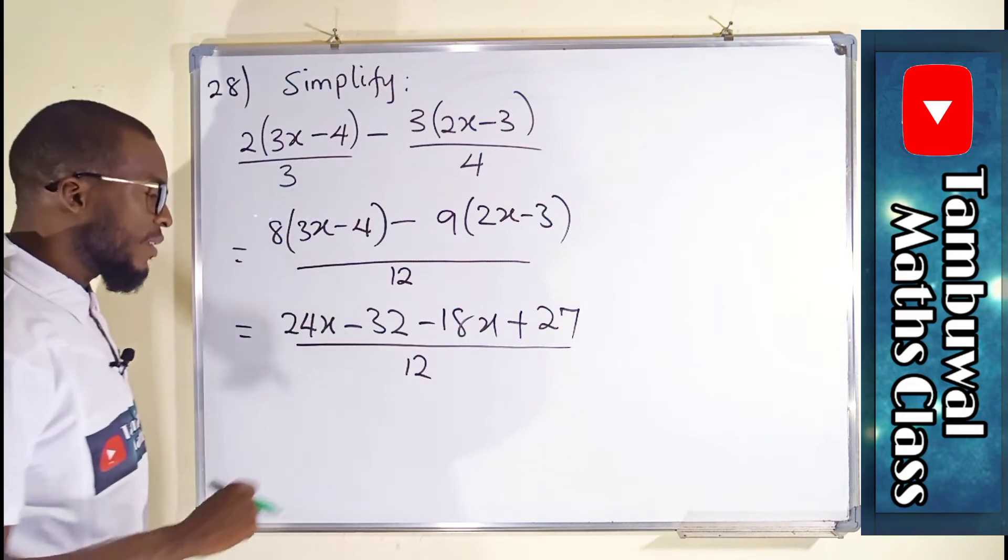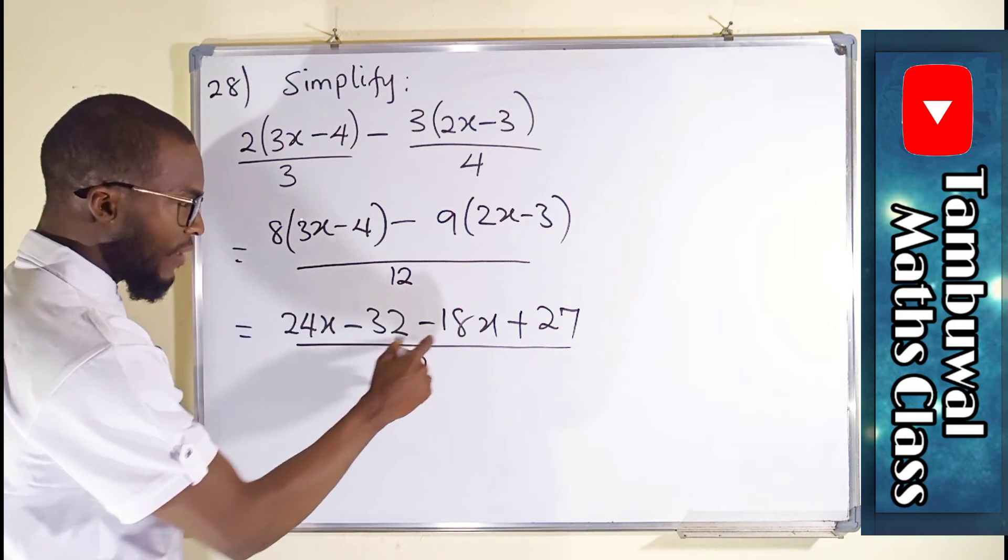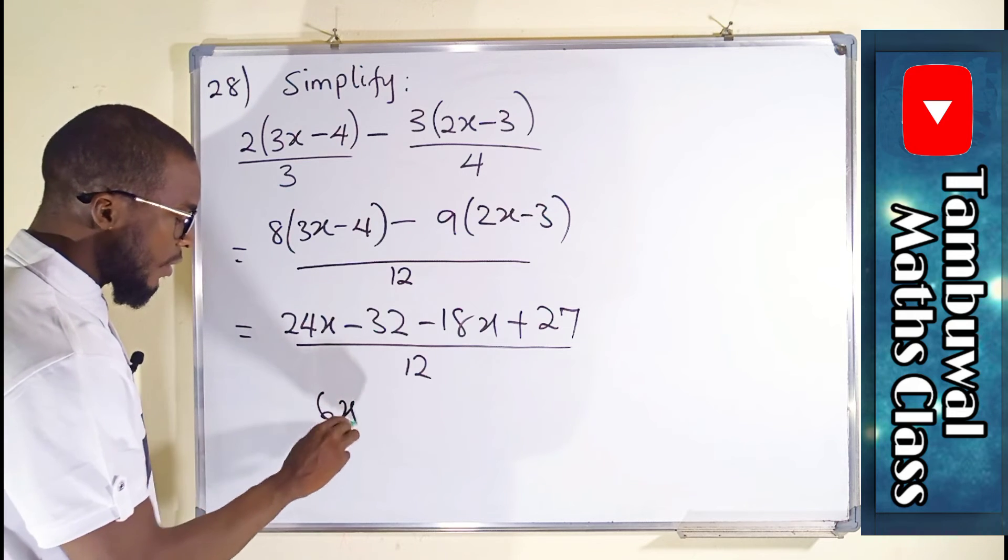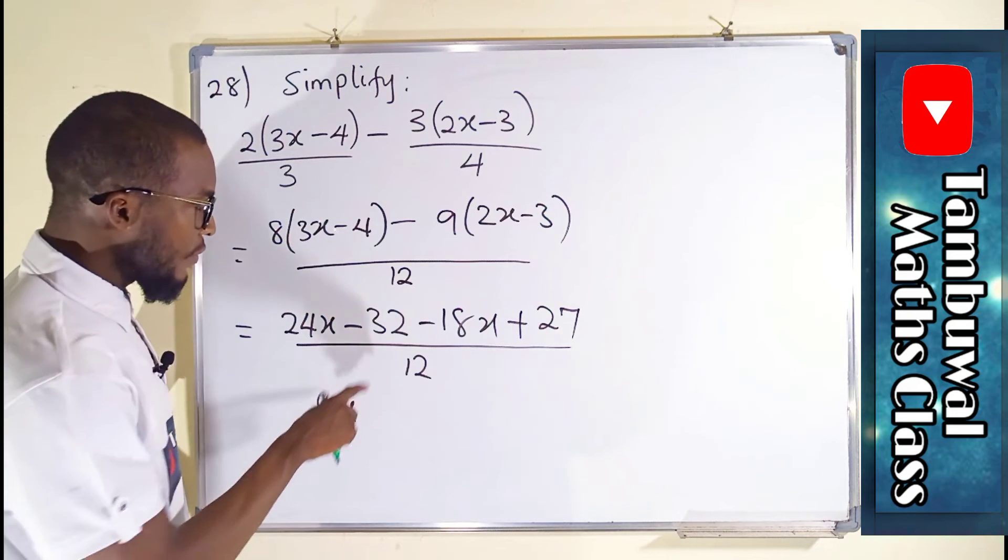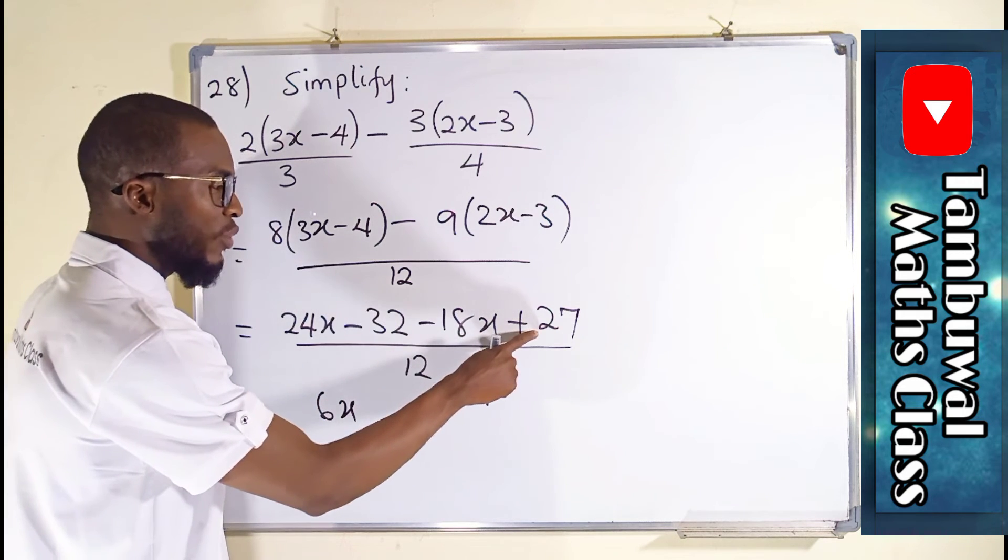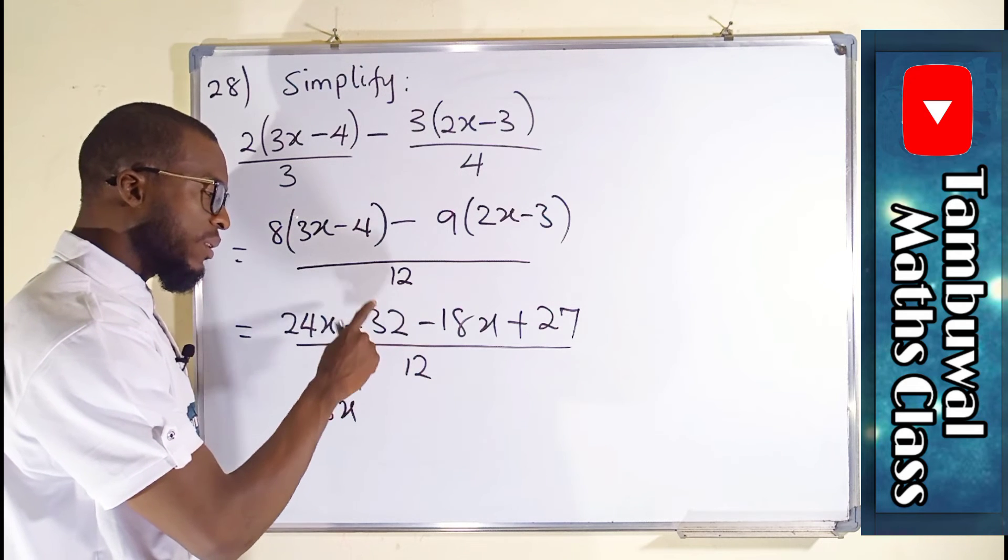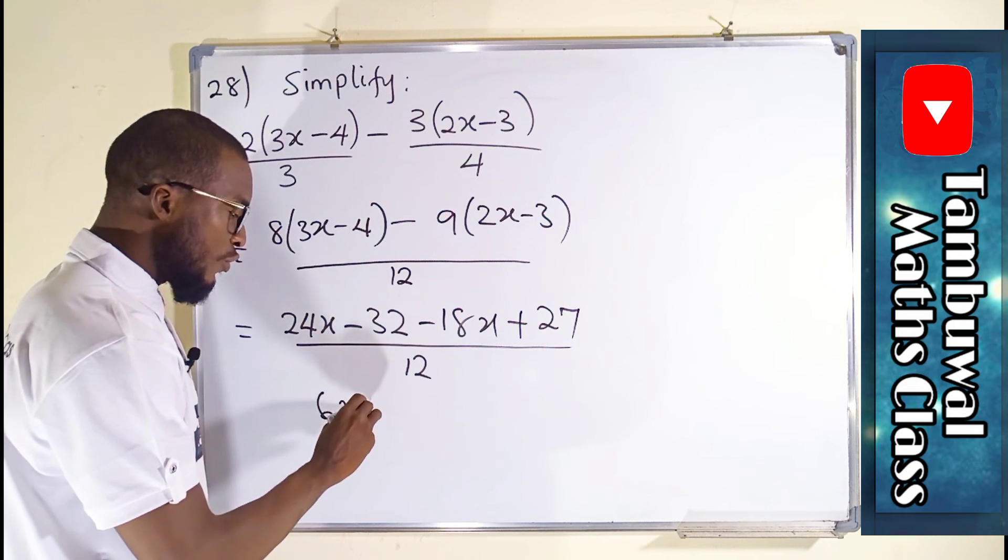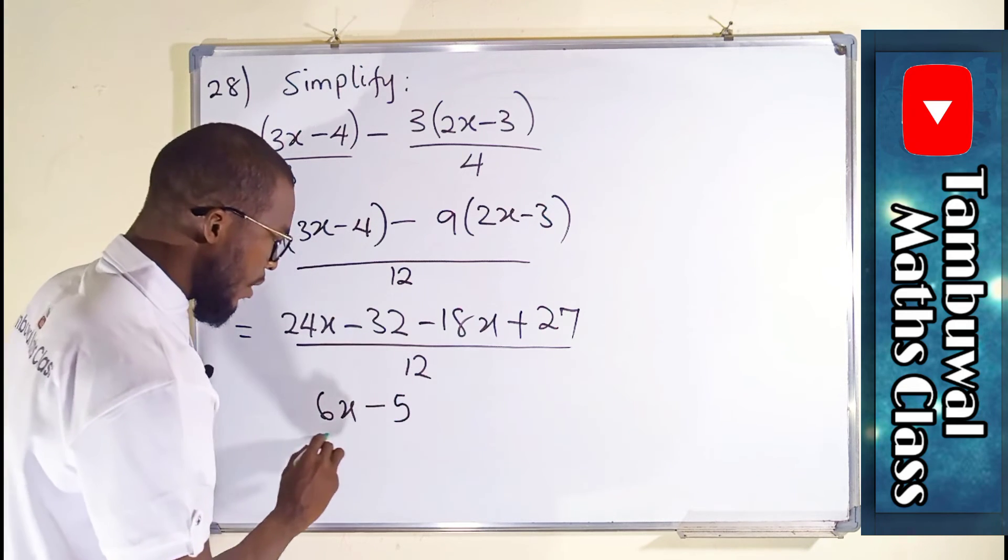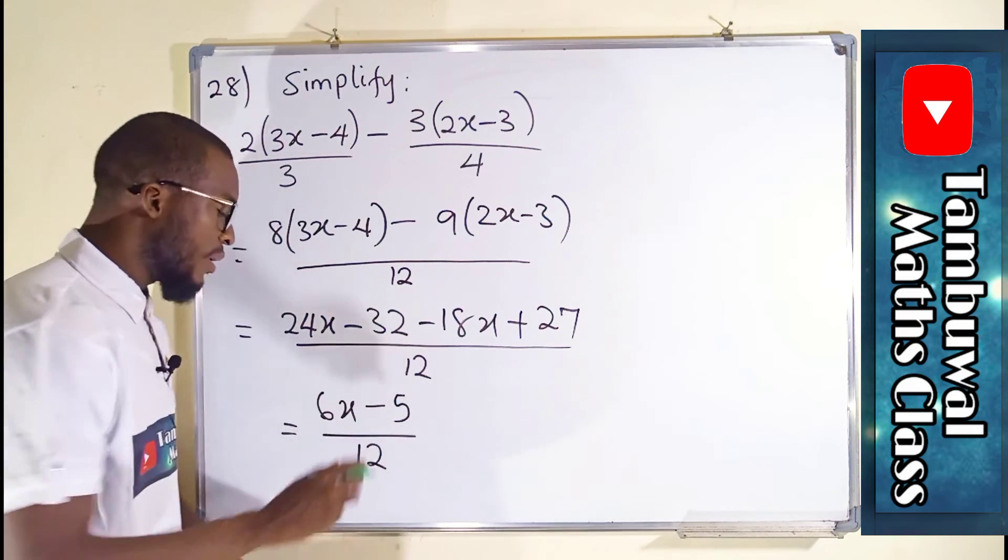Now you collect the like terms. We have 24x minus 18x is 6x. Then we have minus 32 plus 27 is just like saying 27 minus 32, which is equal to minus 5 over 12. And this is our answer.